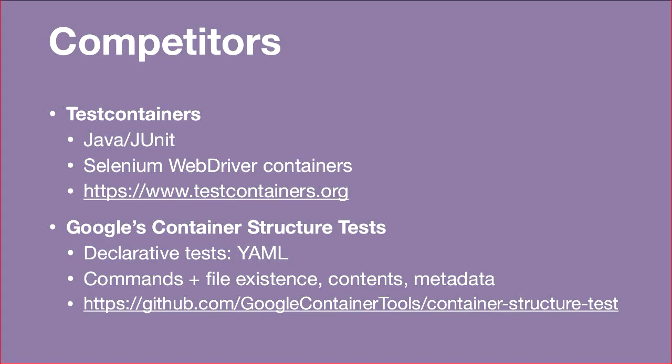I do need to talk about some competitors. Test containers is probably the project most similar to this — in fact Seaworthy was partly inspired by it, and we copied some of the functionality — but that is written in Java. If you're in Java land, I would actually recommend it; it's quite full-featured. And there's Google's container structure tests — this is more of a declarative style of testing where you write a YAML file with all the things you expect. As far as I know, it doesn't provide any way to start up multiple containers and volumes and set them up in a certain order. It's basically just you run one container.